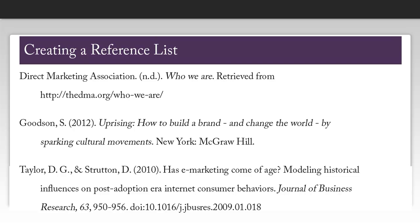Once you have all of your citations, you can create your reference list, which will go at the end of your paper. You want to make sure your references are in alphabetical order and that they each have a hanging indent so that the first line of each citation is longer than the subsequent lines. Your reference list should also be double-spaced, and the top of your page should say "References."